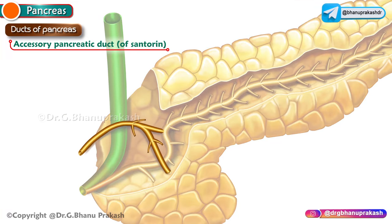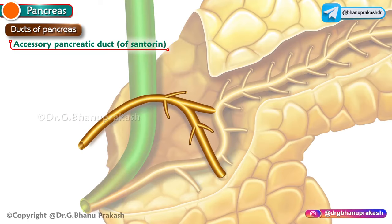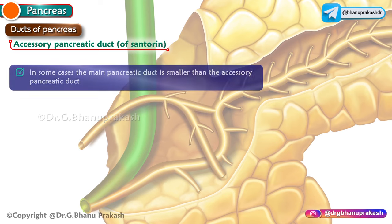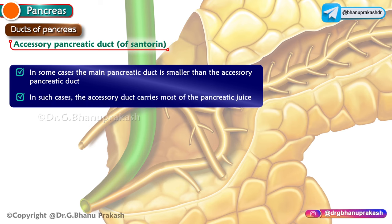The accessory pancreatic duct begins in the lower part of the head, runs upwards and medially, and opens into the second part of the duodenum at the tip of the minor duodenal papilla, 2 to 3 centimeters above the opening of the main pancreatic duct, or 6 to 8 centimeters distal to the pylorus. Usually the accessory duct communicates with the main pancreatic duct, but in some cases where the main duct is smaller, the accessory duct carries most of the pancreatic juice.